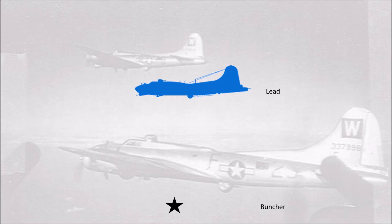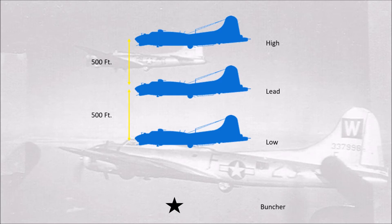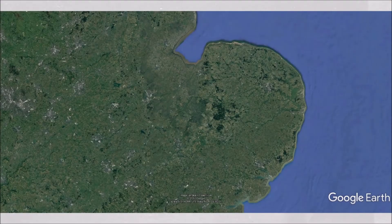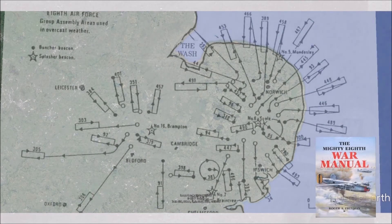Looking from sideways, the lead aircraft would fly a circuit to and from a briefed buncher or splasher beacon, or designated area. The lead aircraft will fly at a briefed altitude. The lead aircraft of the high squadron would assemble their formation 500 feet higher than the lead squadron. Squadron and group formations were assembled at around the same time. Groups would assemble on their assigned splasher or buncher beacon.